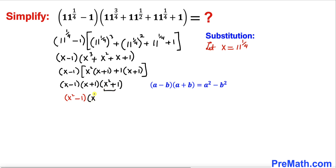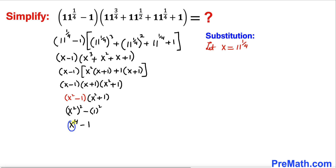Applying the identity once again to (x squared minus 1)(x squared plus 1), we get x squared whole squared minus 1 squared, which simplifies to x power 4 minus 1. Since x equals 11 power 1 over 4, substituting gives us 11 power 1 over 4 whole power 4, minus 1.